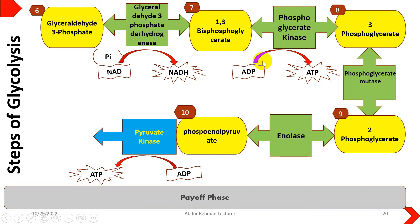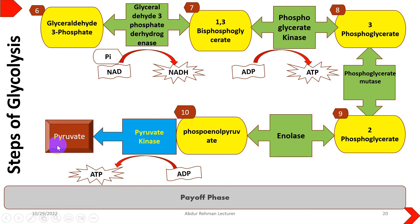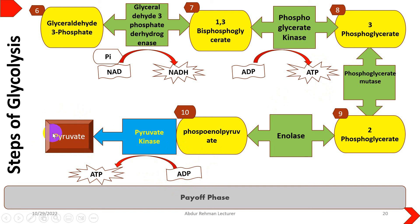The ATP produced at step seven and step ten are basically substrate-level phosphorylation. So two ATPs are produced, and phosphoenolpyruvate is converted into pyruvate. Since the payoff phase is repeated twice, all these molecules are produced in double concentration: two NADH are produced, two ATP at step seven, two ATP at step ten, and two pyruvate molecules, which are the end product of glycolysis.